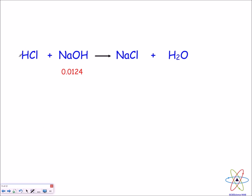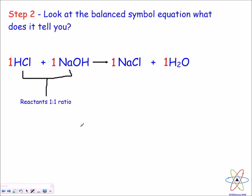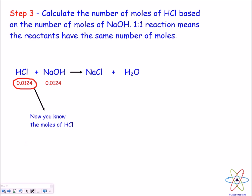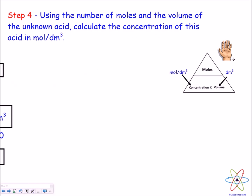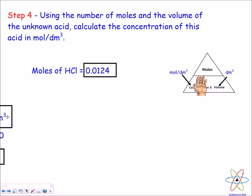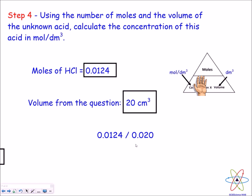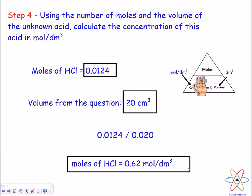Now we need to work out the number of moles of HCl. Looking at the balanced symbol equation, 1 mole of HCl reacts with exactly 1 mole of NaOH, which means HCl must have the same number of moles as NaOH: 0.0124. Now that we know the moles of HCl, we calculate the concentration using moles divided by volume: 0.0124 divided by 0.02 gives 0.62 mol/dm³.